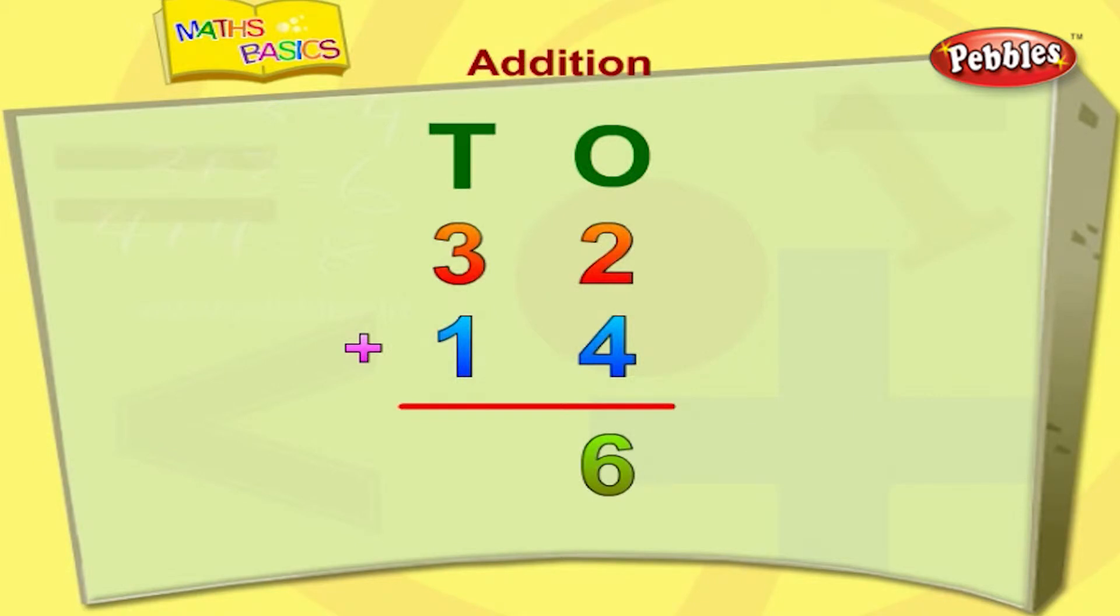Now, add the tens column. 3 plus 1 is equal to 4. That's right. 32 plus 14 is equal to 46.